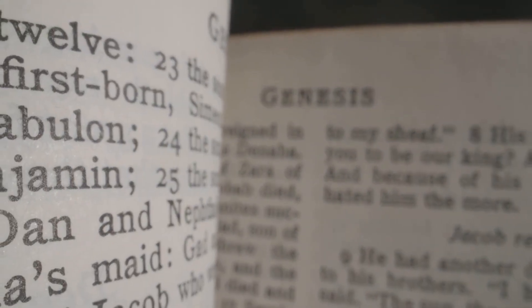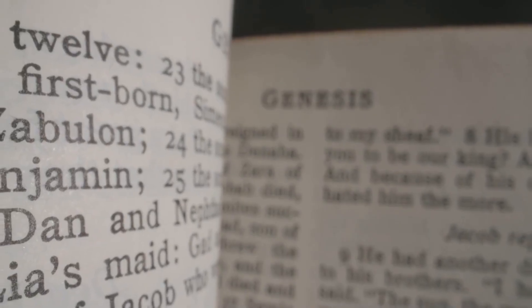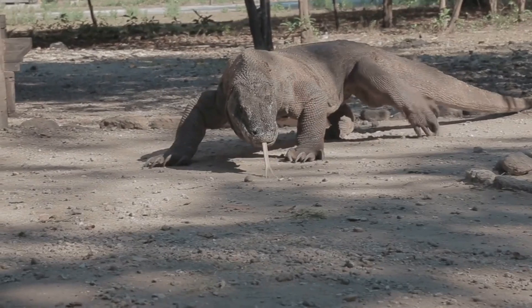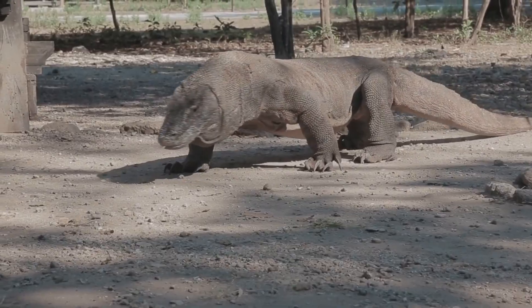Parthenogenesis is a form of asexual reproduction where an embryo develops from an unfertilized egg cell. The word comes from the Greek parthenos, meaning virgin, and genesis, meaning origin. It occurs naturally in many animals but not in humans.